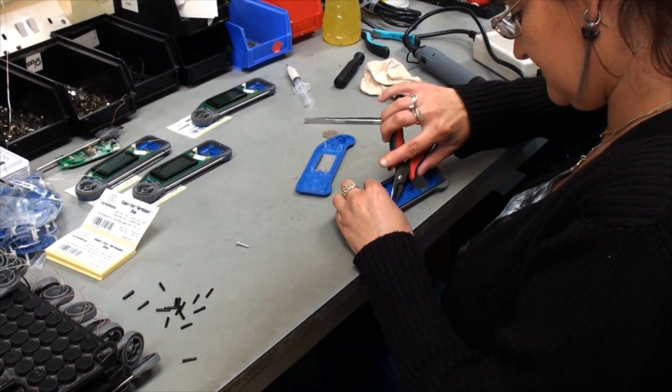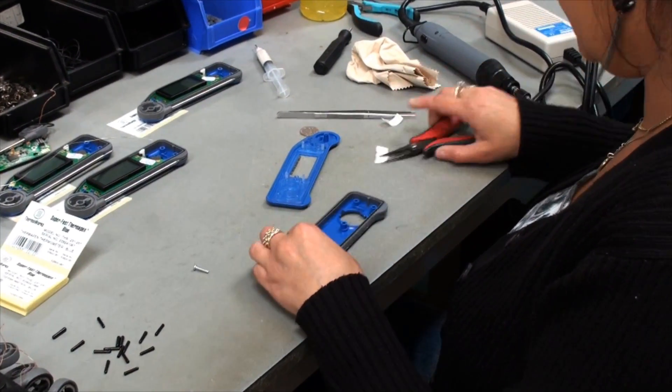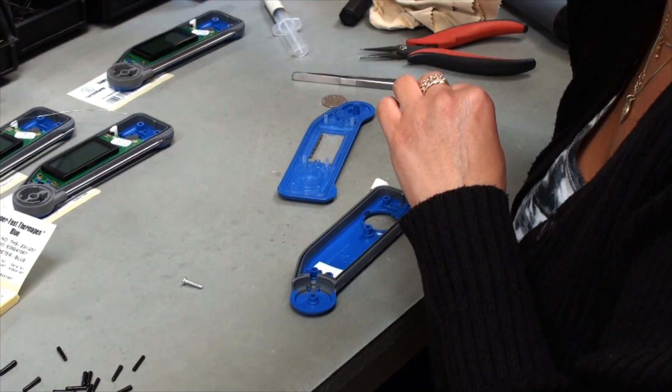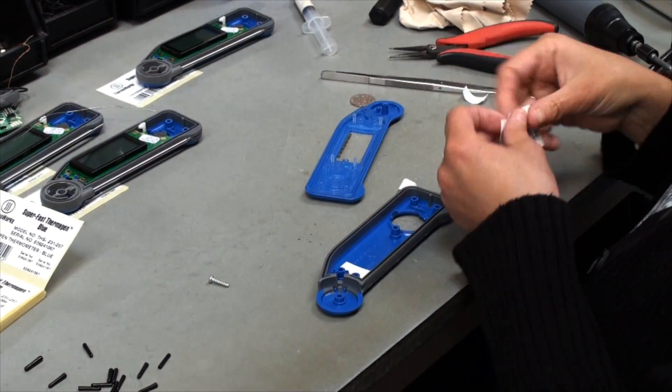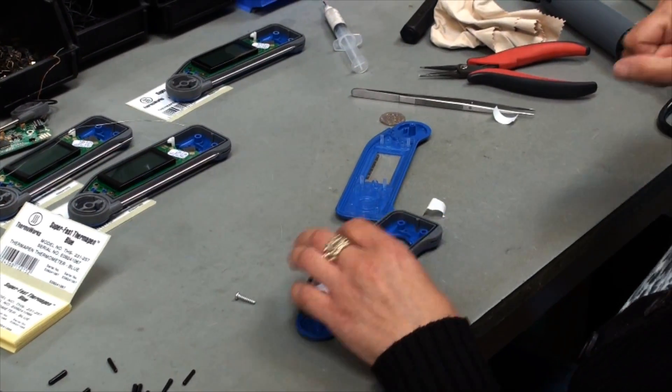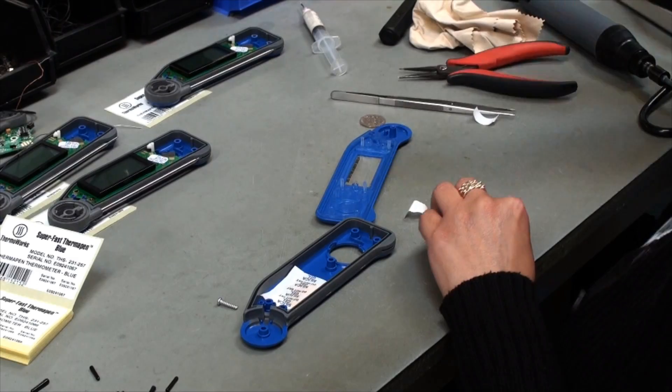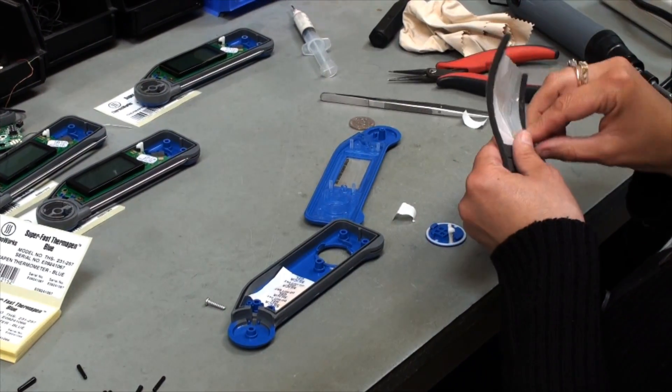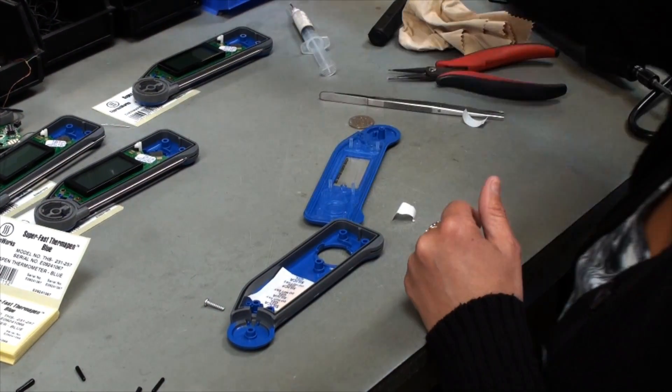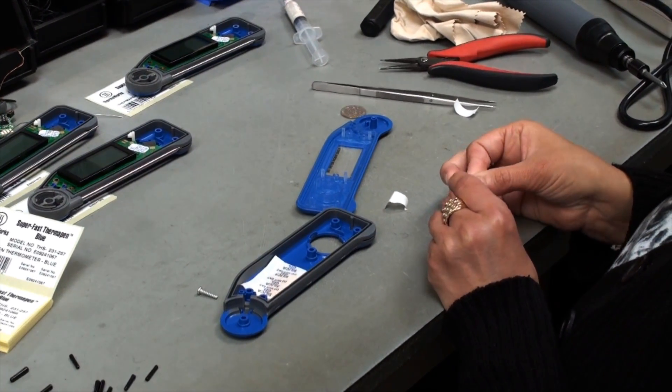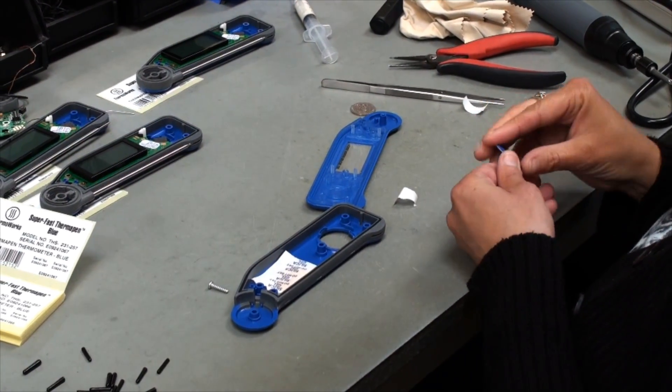This is used to adhere the silica gel sachet inside the case. Now assembling the battery cover, sticking the foam pad on there so it helps retain the batteries inside the unit.